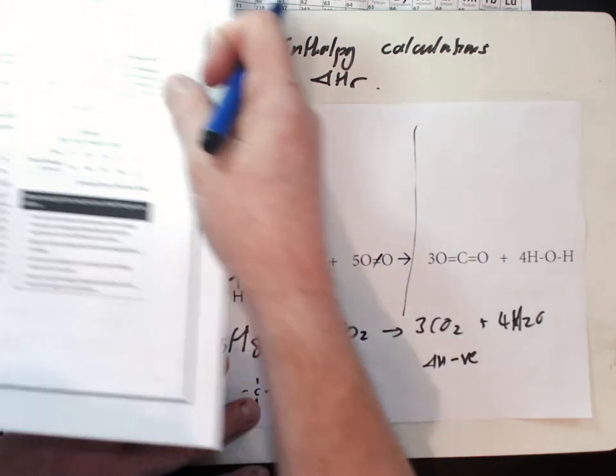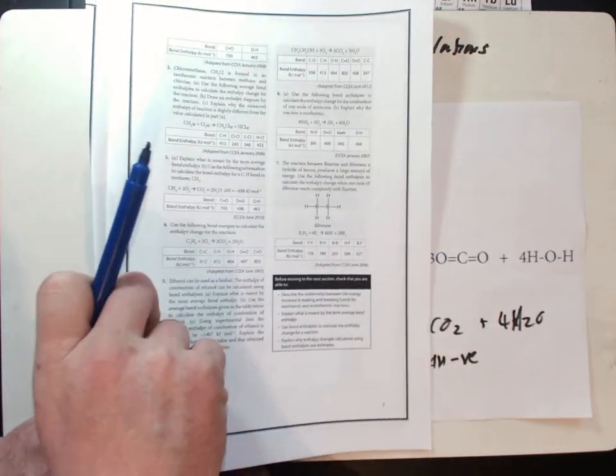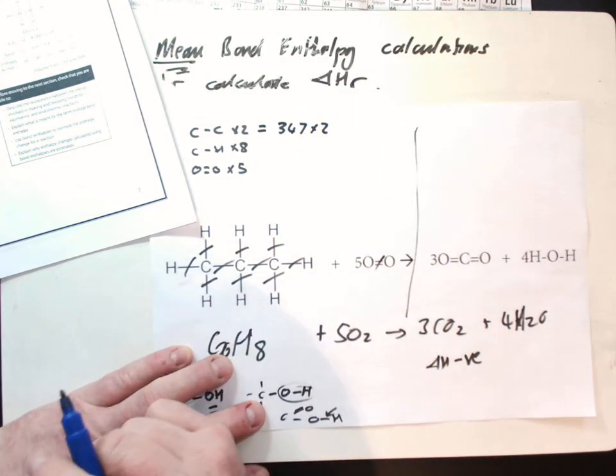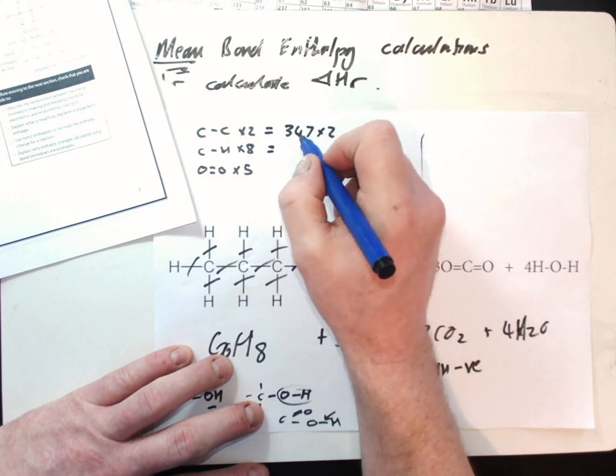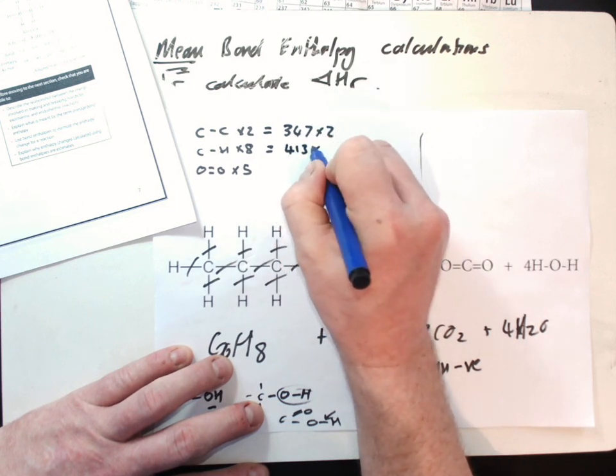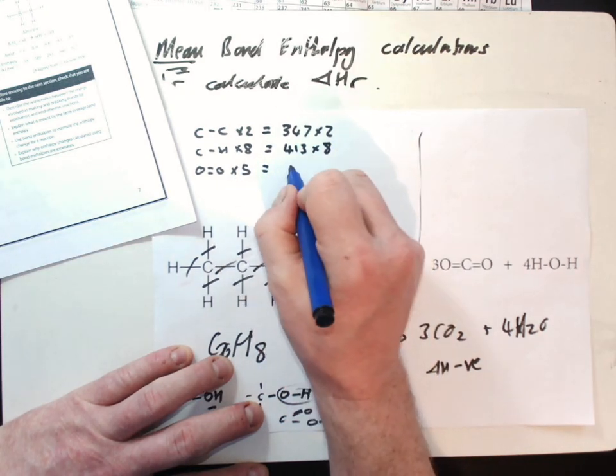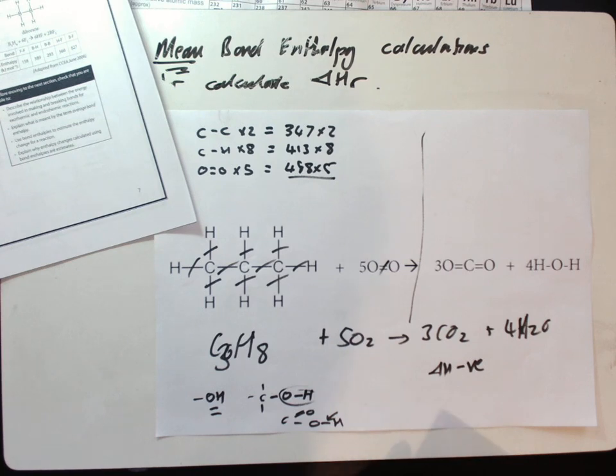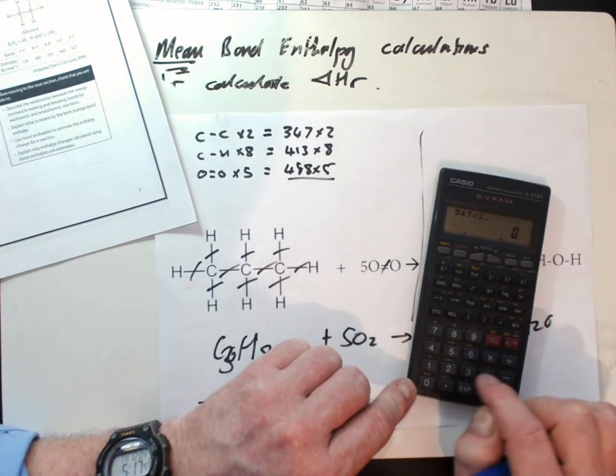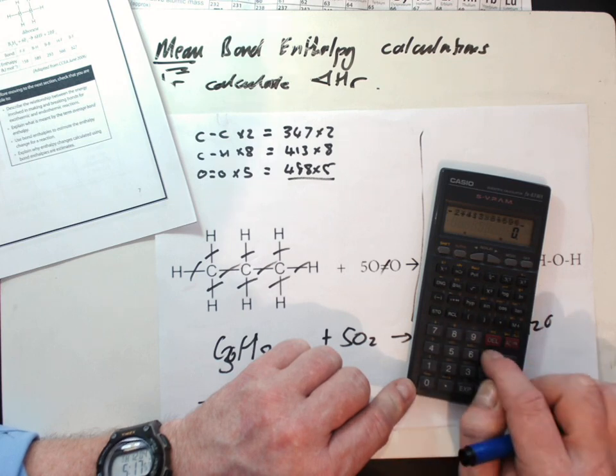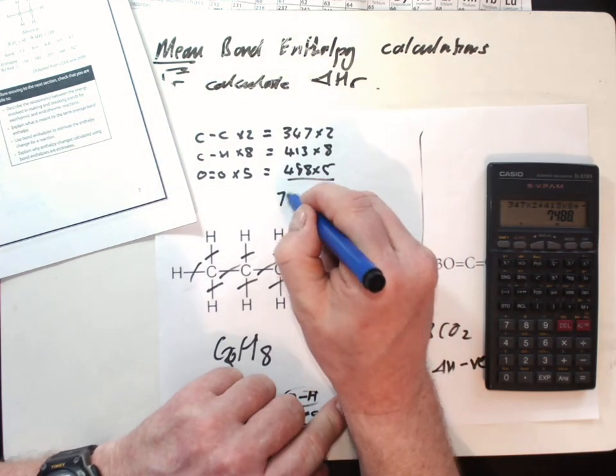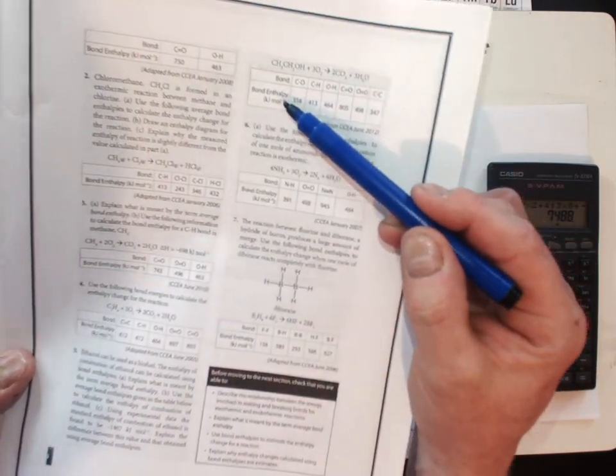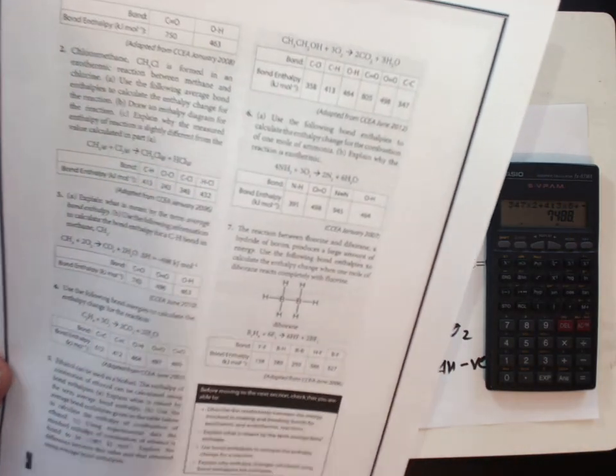We have two carbon-carbon bonds. We'll go back to our table of data. A carbon-carbon bond is 347, but we've got two of them to break. A carbon-hydrogen bond is 413, and we have eight of them. An oxygen double bond is 498, and we have five of them. We'll quickly add that up on the calculator. That gives me 7488, and that is in kilojoules, because our data in our table is in kilojoules per one mole.